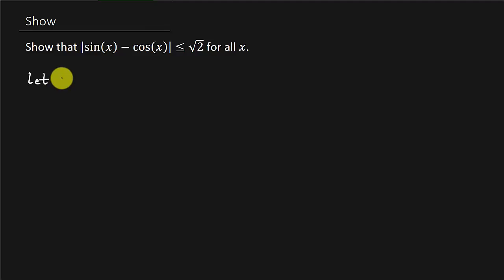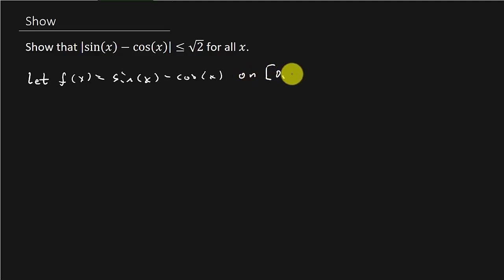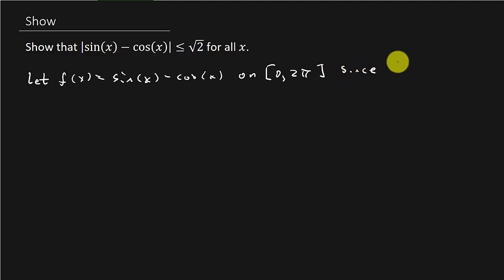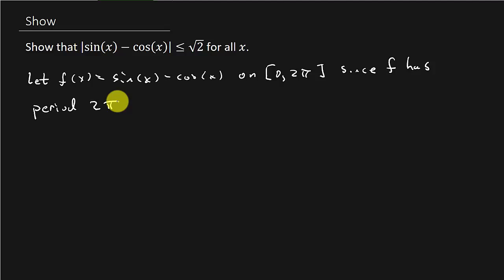Let's start out and say, let f of x equal sine x minus cosine x on the interval 0 to 2 pi, since f has period 2 pi. It's a periodic function, and we're just going to let f of x equal what's inside the absolute value. So let's find the critical numbers of f of x.